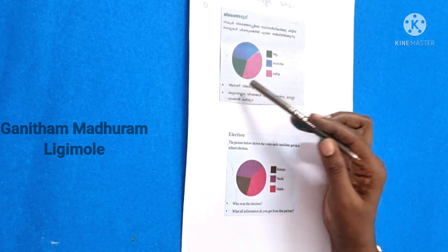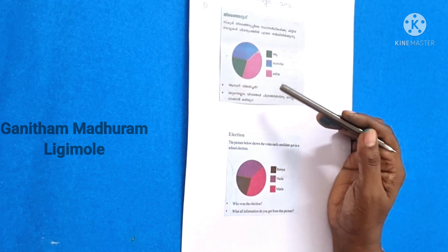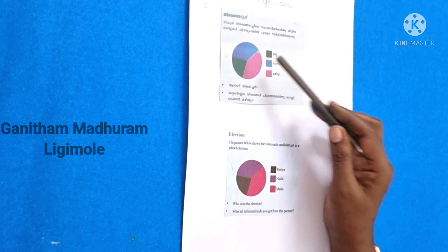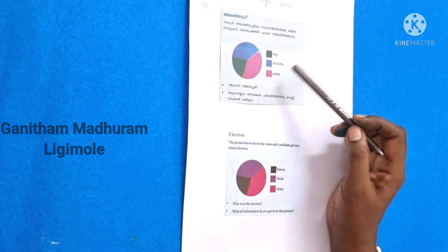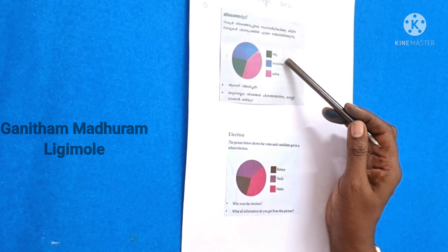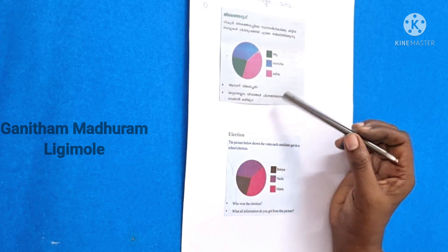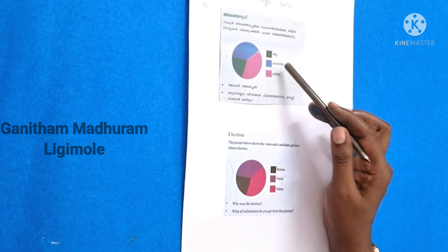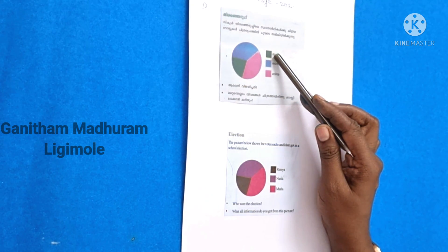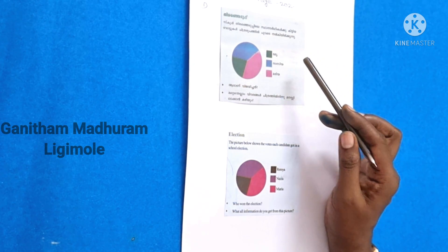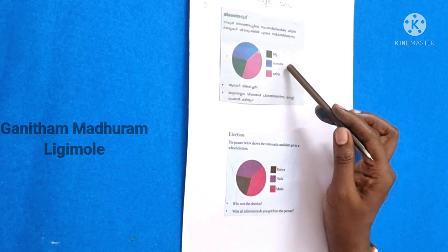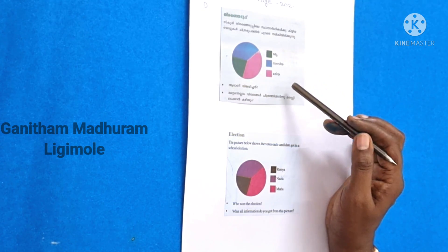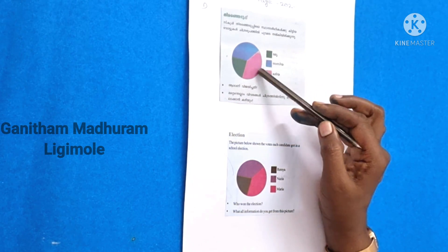Now we are going to talk about this. Who won the election? This is Remy with the least number of votes. Who won the election? Nasia is in the second position.